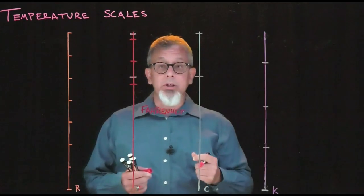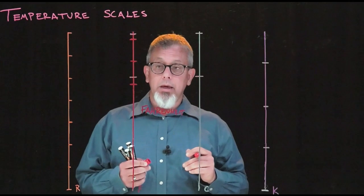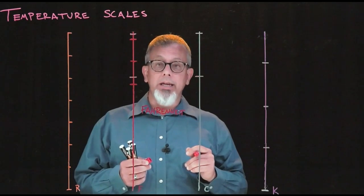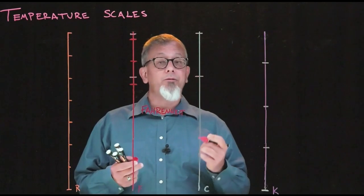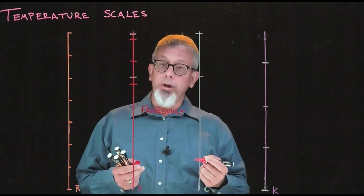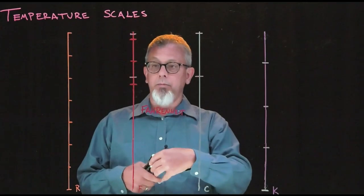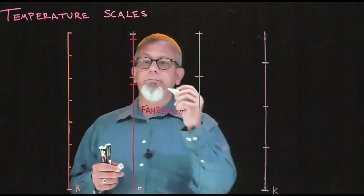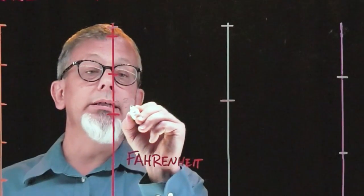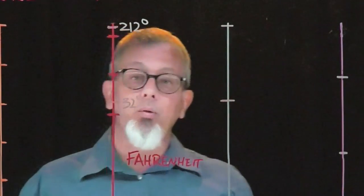There's two important numbers that we use to sort of give ourselves a basis in that scale. The numbers that we're interested in are the freezing point of water and the boiling point of water. Those two numbers in the Fahrenheit scale are typically 32 degrees when water freezes, and 212 degrees when water boils.